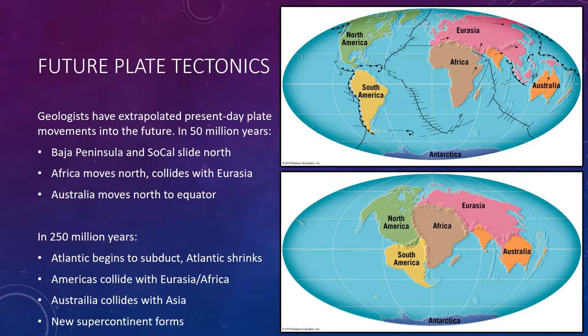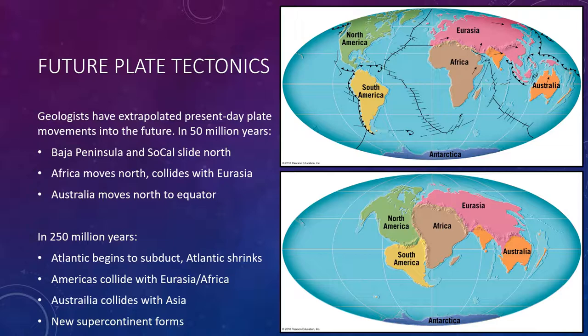We can even step plate motion into the future. Geologists have extrapolated present-day plate movements into the future. The figure illustrates where Earth's landmasses may be 50 million years from now if present plate motions persist. In North America, the Baja Peninsula and the portion of Southern California west of the San Andreas Fault will have slid past the North American plate. If this northward migration continues, Los Angeles and San Francisco will actually pass one another in about 10 million years, and in about 60 million years, the Baja Peninsula will begin to collide with the Aleutian Islands up near Alaska.